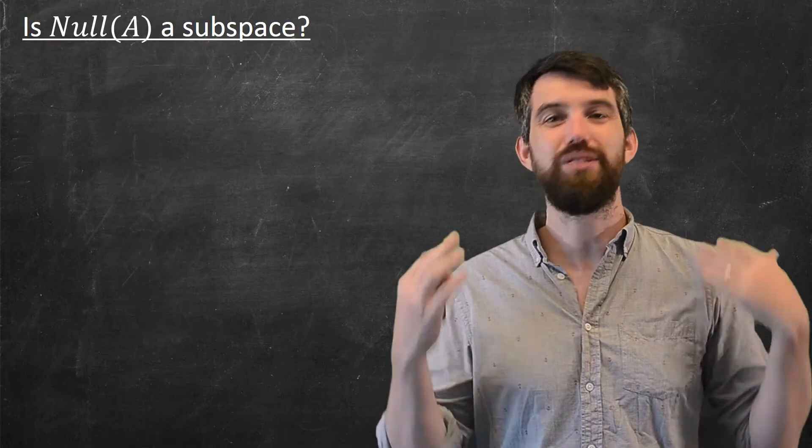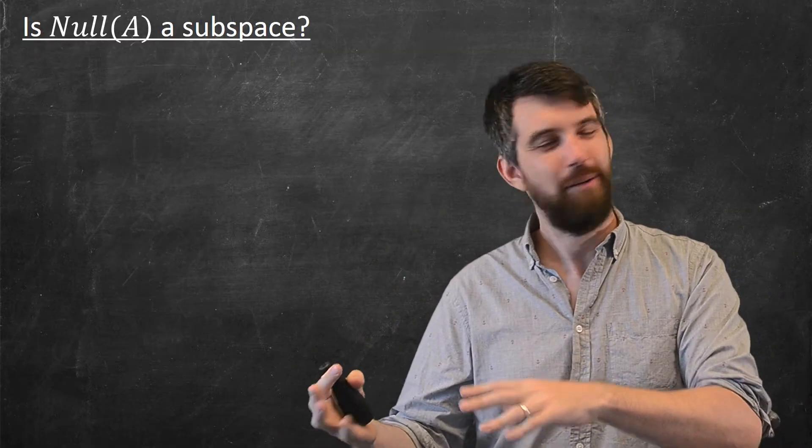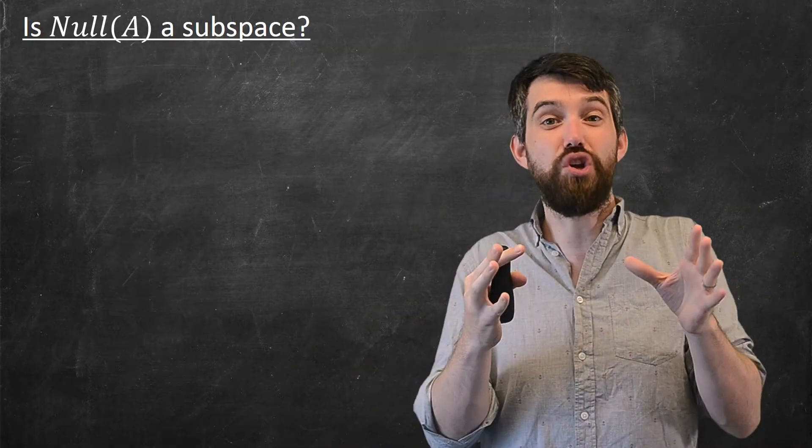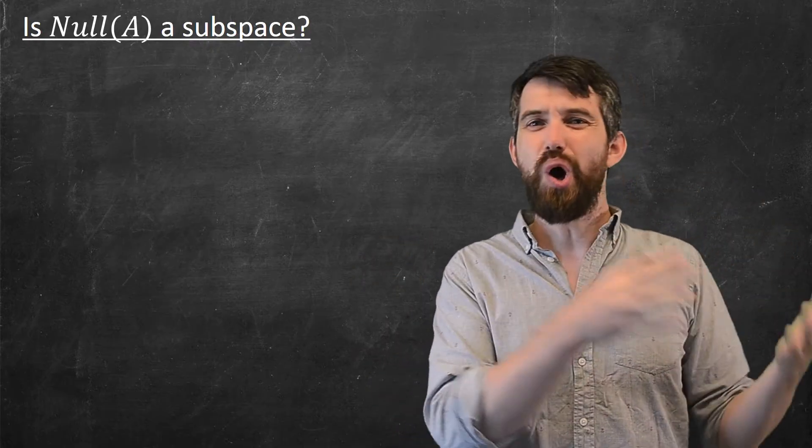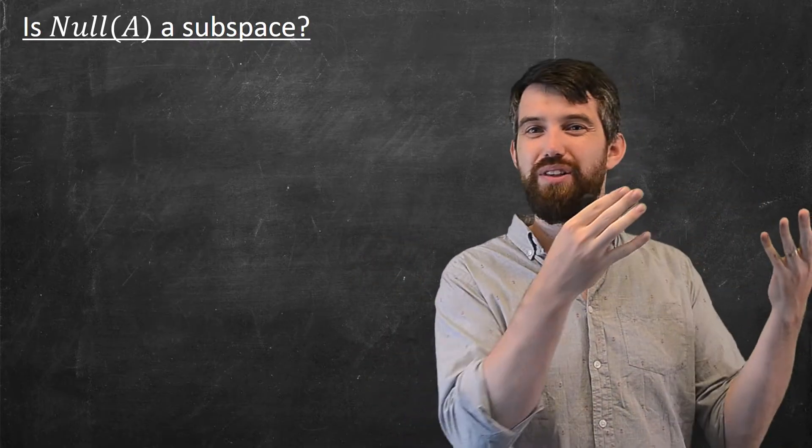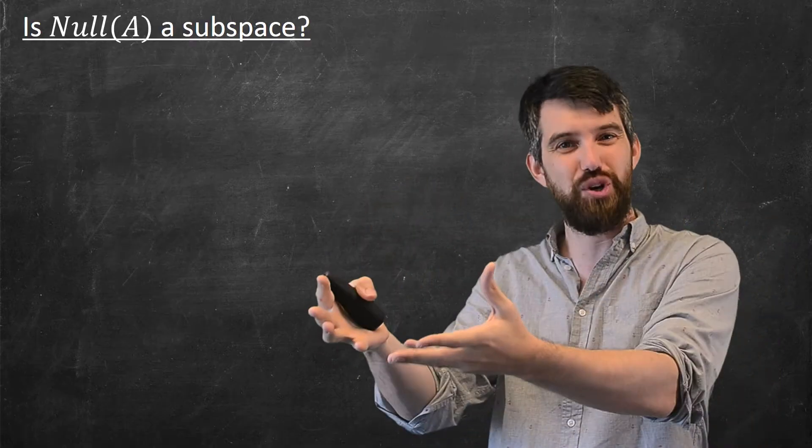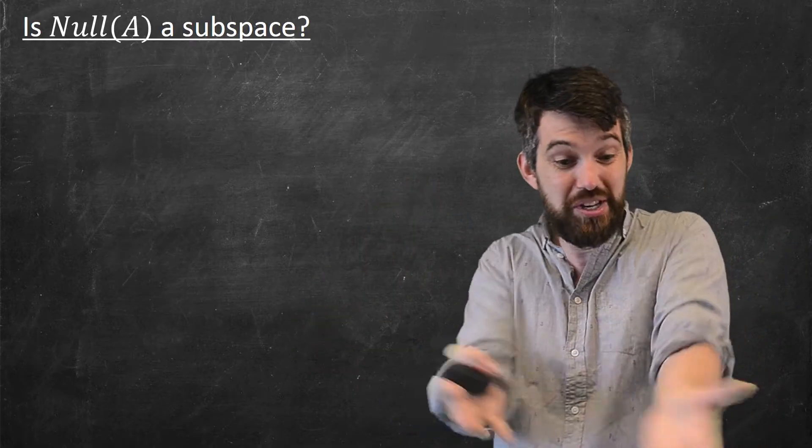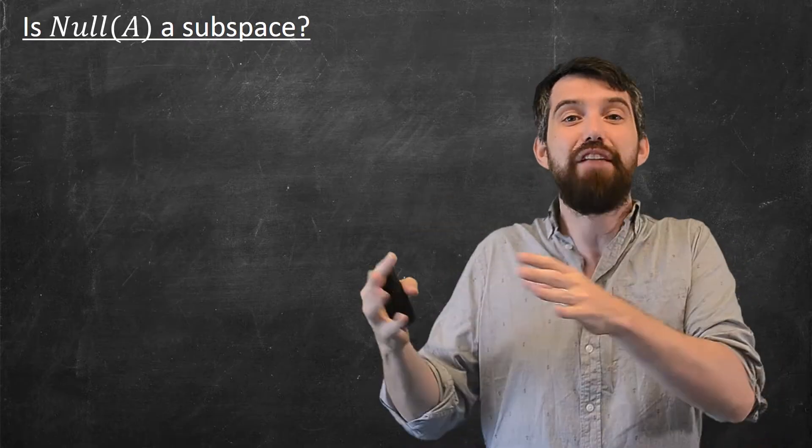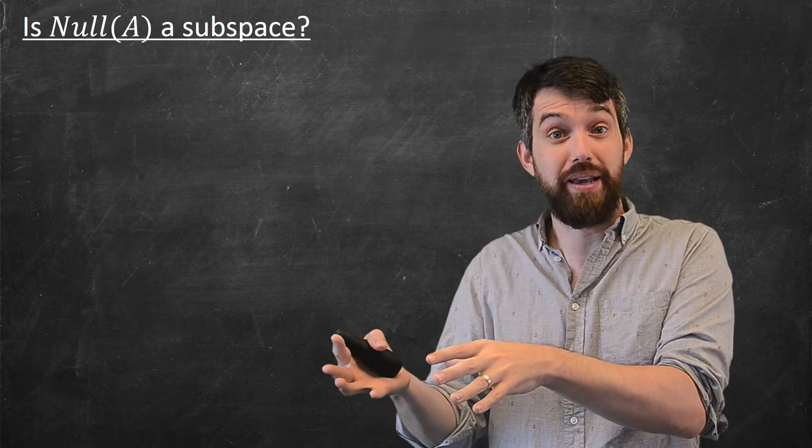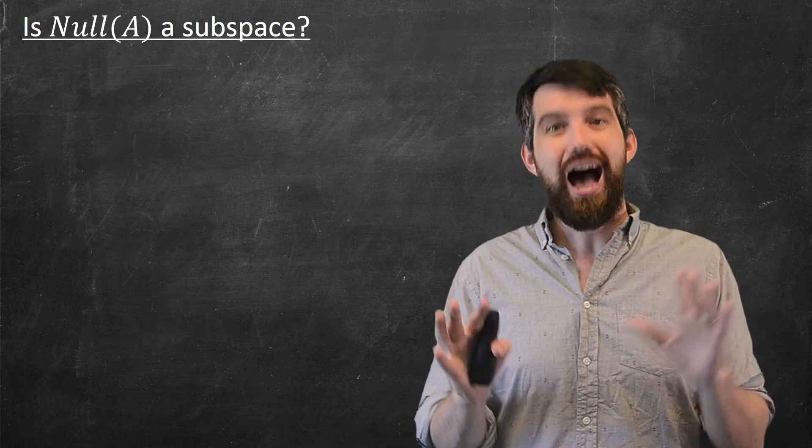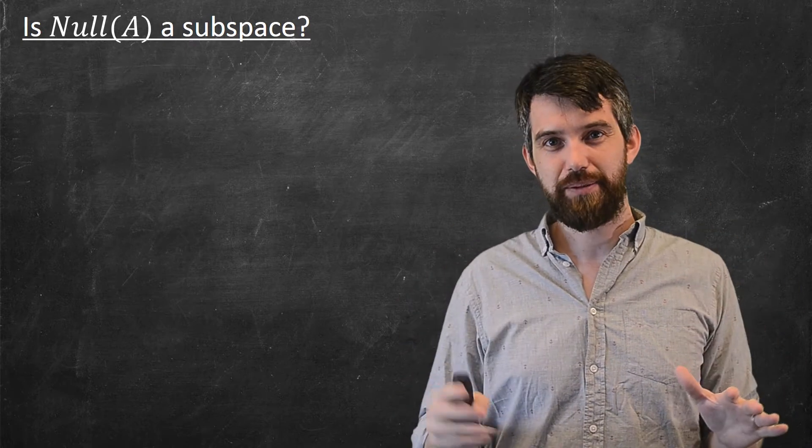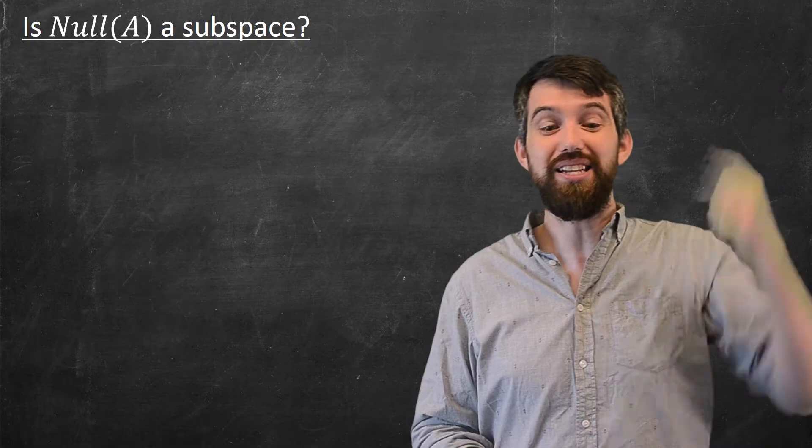Now, I said the null space was a subspace, but I haven't actually proven that yet. I've only shown that it is a subset that I might care about. In the case of the column space, we sort of cheated because we saw that the column space was the span of something, and we've previously shown that the span was indeed a subspace. We don't have that here. We haven't yet figured out whether or not the null space is the span of something. Spoiler alert, it will be. Now, how do I prove then that it's a subspace? So let's just test our different conditions that we need to do. We've got the three of them.